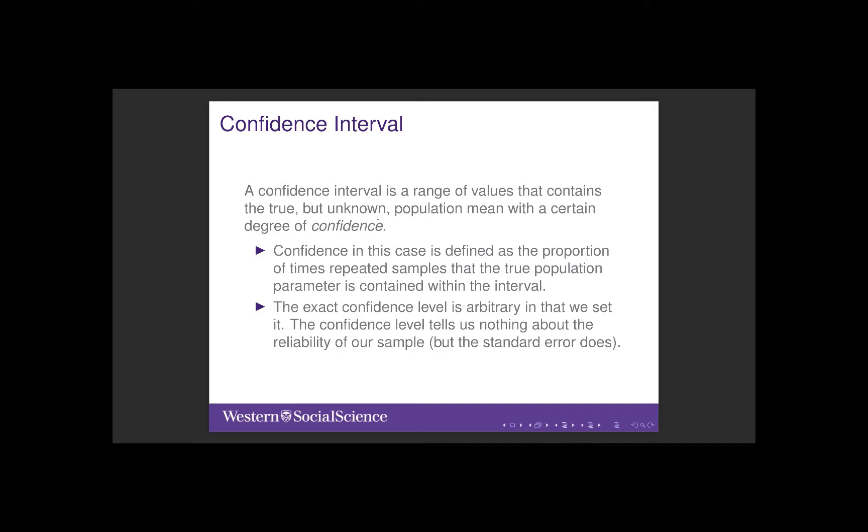The level that we pick is arbitrary. That is, we could pick anything between 0 and 100. However, there are strong conventions in political science specifically and the social sciences in general to use either 95%, 99%, or 99.9%, with 95% being the most common value.